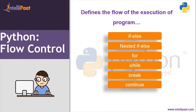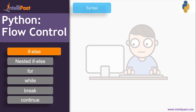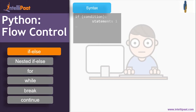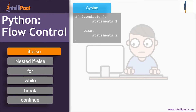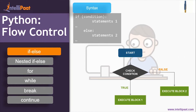Let's start with if-else. The syntax is: if the condition is true, then execute statement one; else execute statement two. Looking at the flow of execution — you start, check the condition. If the condition is true, execute block one. If the condition is false, go to the else part and execute block two.